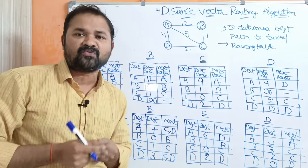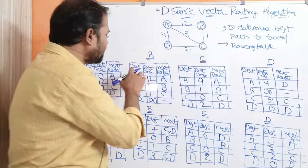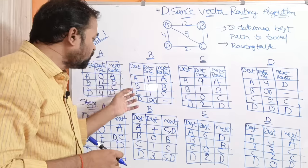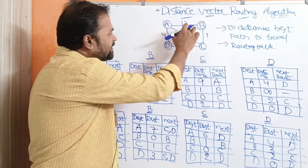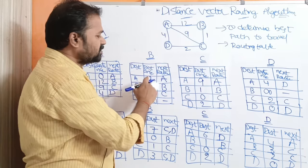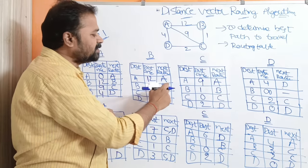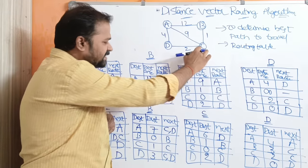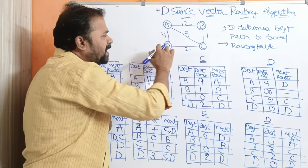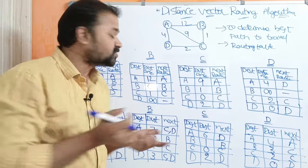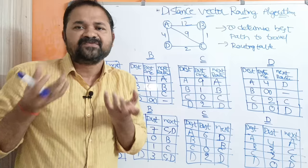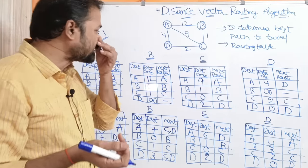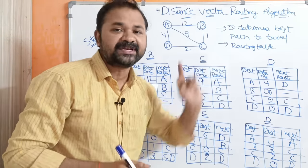This completes the routing table of A. For router B: B to A distance is 12 and next router is A; B to B distance is 0 and next router is B; B to C distance is 1 and next router is C; B to D — there is no path, so the distance is infinity and the next router is a hyphen (unknown). Infinity specifies we don't know the distance, and a hyphen means we don't know the next router. Likewise, routing table of C and routing table of D are calculated similarly.